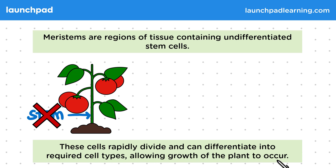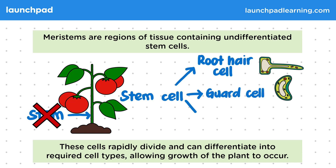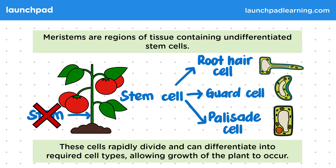Meristem cells that compose the meristem tissue are stem cells that can differentiate into any type of plant cell throughout the life of the plant. For example, they could differentiate into a root hair cell, a guard cell, or a palisade cell. These are just a few examples.